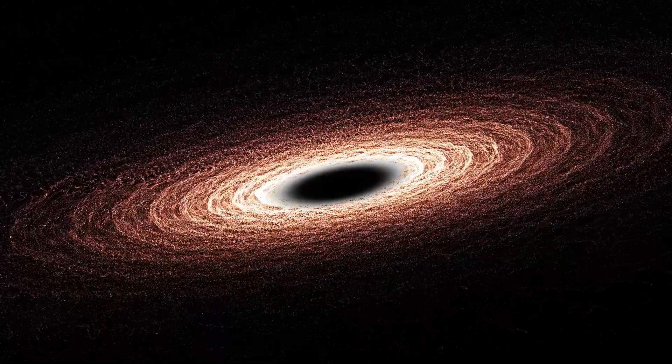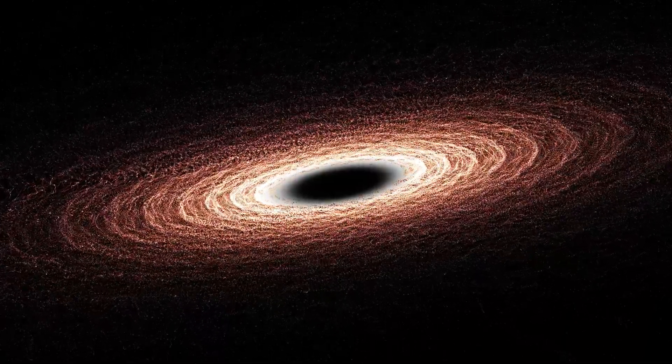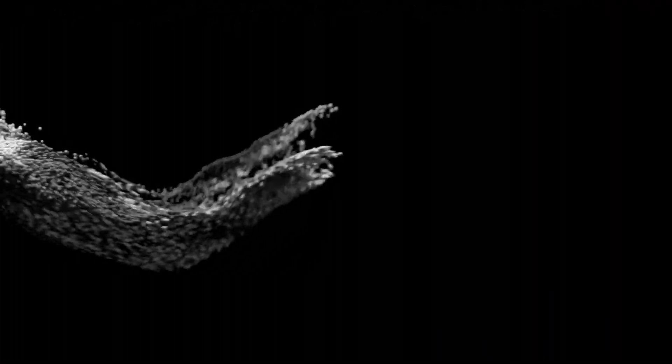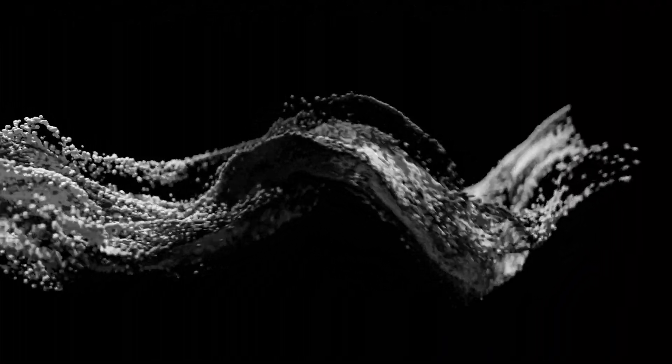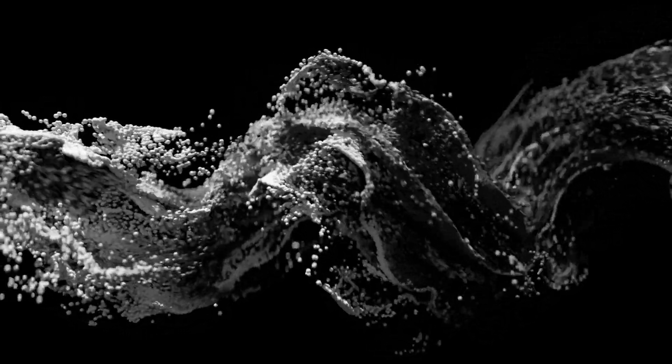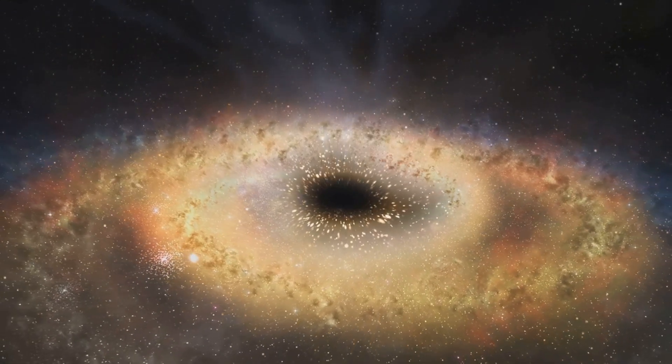At the heart of our galaxy lies Sagittarius A, a supermassive black hole about 4 million times the mass of the sun. Even though we can't see it directly, its gravity has a powerful effect on nearby stars and pulls them into orbits at incredible speeds.